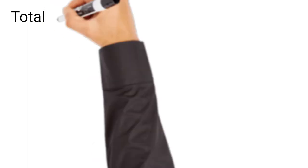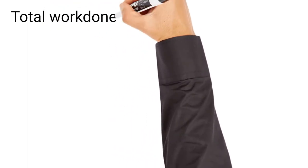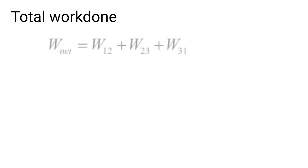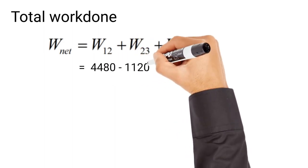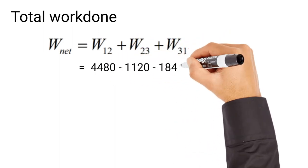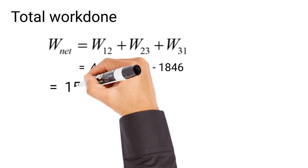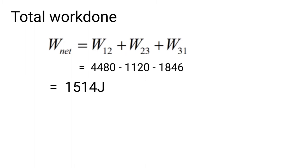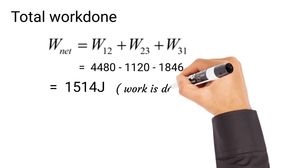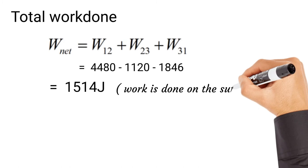Now the last part: the total or net work of the cycle is W_net = W₁₂ + W₂₃ + W₃₁. Adding 5922, −1120, and −1846 gives approximately 2956 J (positive answer means work is done on the surroundings by the system).